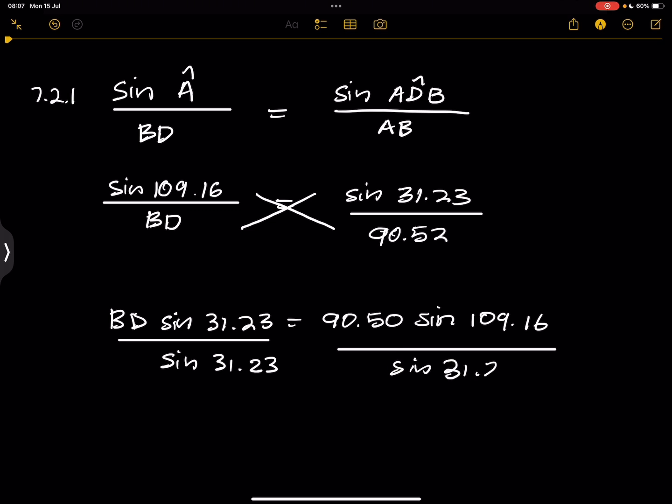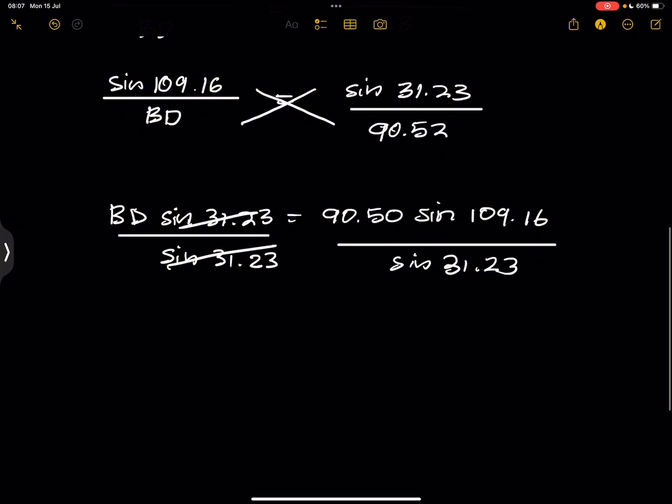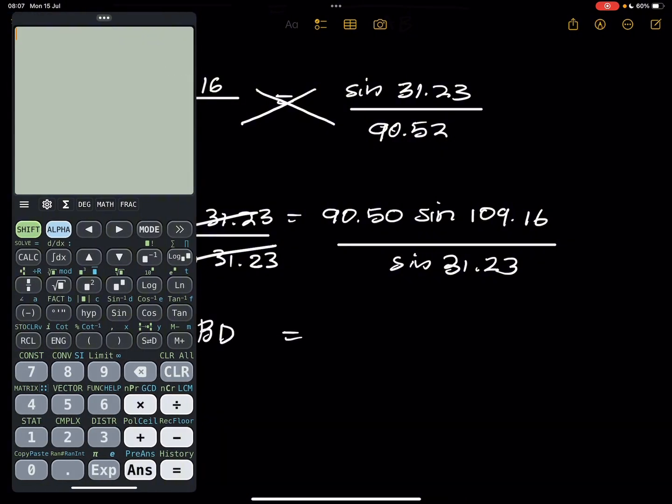So let's try and simplify everything. So this is 31.23, that cancels with that. And so we're left with side BD. Now we can put that in the calculator. So that's 90.52 multiplied by the sine of 109.16 divided, let's close that bracket, and all of that divided by the sine of 31.23. I'm going to close that bracket as well.